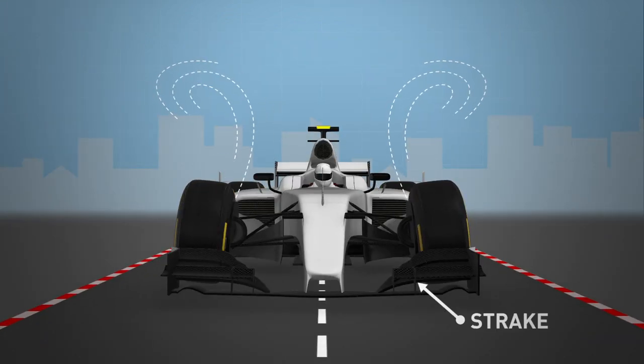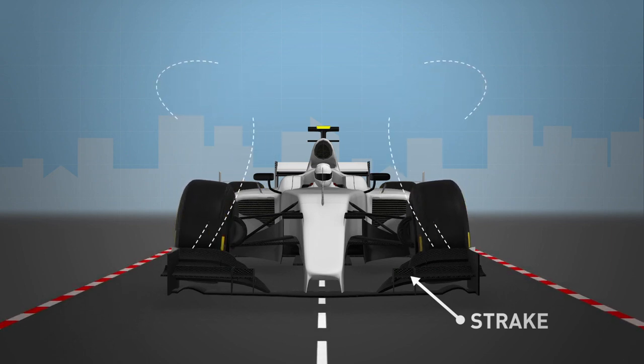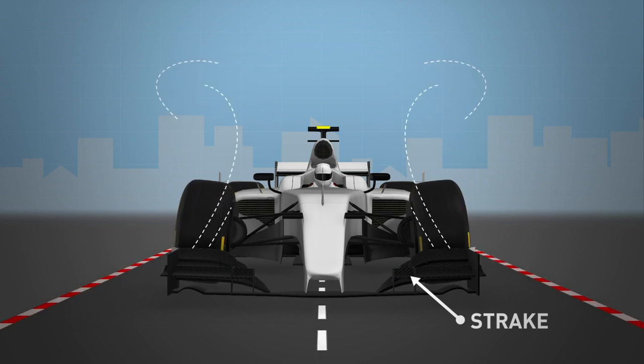Again, the same design principles are applied in F1 cars, where strakes are placed on the front wing to control the airflow over the rest of the car.